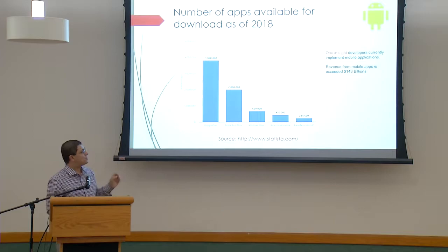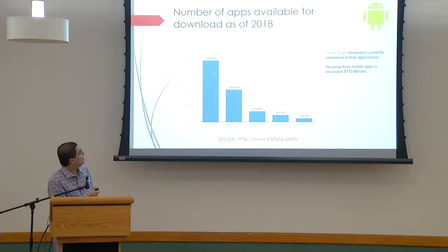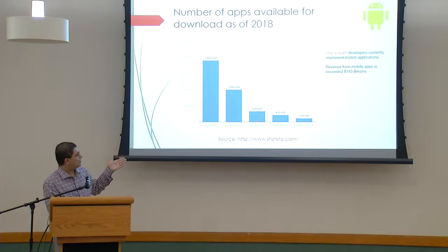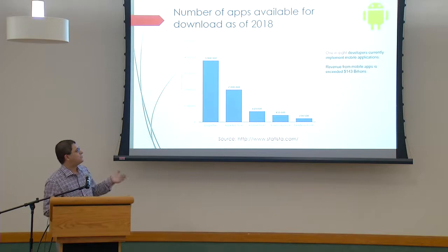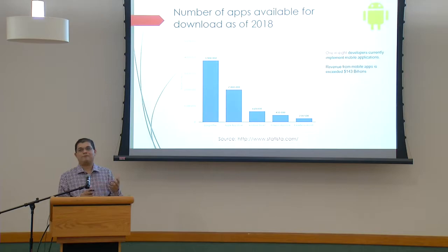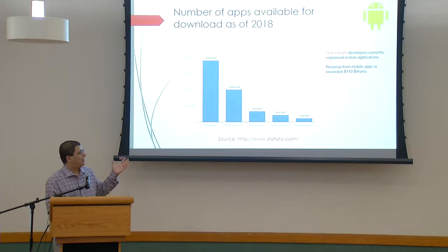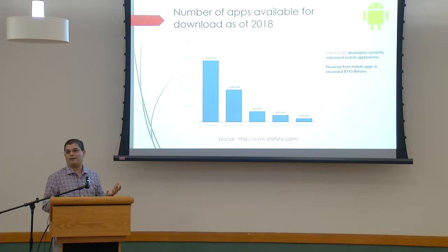Looking at Statista.com, we found roughly 3.8 million apps available in Google Play, which is a huge number. Apple Store follows with 2 million, then Windows Store, Amazon, and BlackBerry in the order of thousands. This gives us an impression of an astounding number of apps. The revenue from mobile apps already exceeded $143 billion a couple of years ago, so it's much higher today — a big economy.